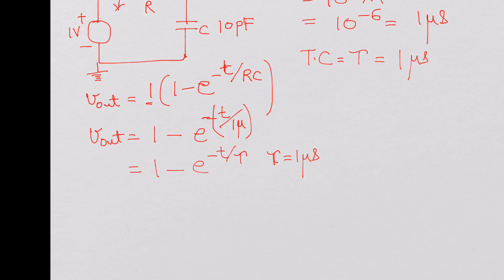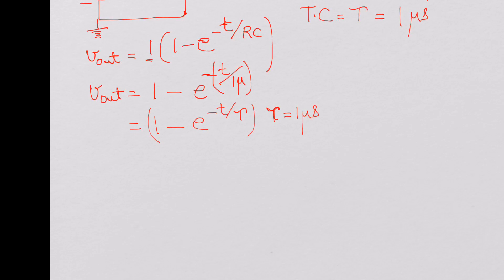Now let's see how many time constants are required for charging the capacitor. Let's look at in terms of time constants and calculate what V out would be. So at one time constant, when T is tau or RC, or in this case 1 microsecond, we get V out.